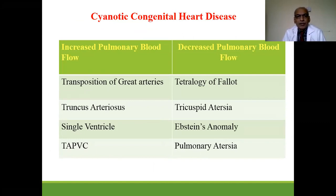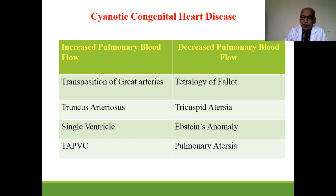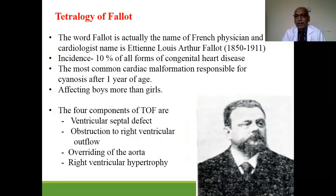Cyanotic congenital heart diseases are divided into two groups depending on pulmonary blood flow. If increased, it is due to transposition of great arteries, truncus arteriosus, single ventricle, or total anomalous pulmonary venous return. If pulmonary blood flow is decreased, it is mainly due to tetralogy of Fallot, tricuspid atresia, Ebstein anomaly, and pulmonary atresia.